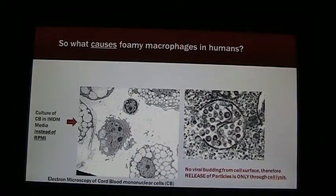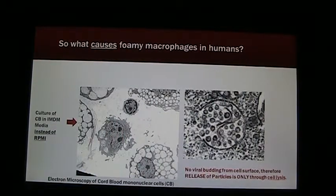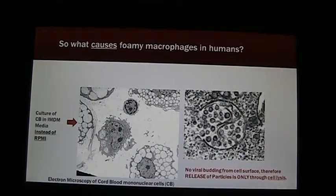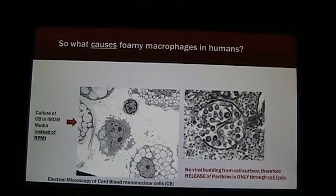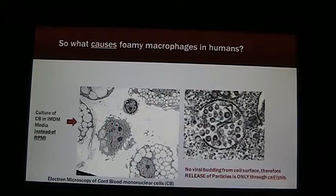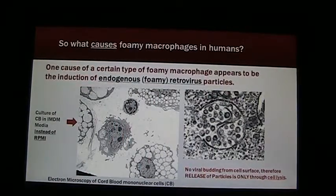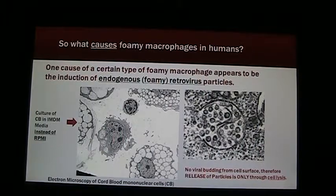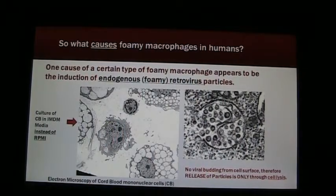None of these viruses appear to be released through the cell surface membrane; release seems to be only through cell lysis. One cause of a certain type of foaming macrophage appears to be the induction of an endogenous foaming retrovirus.